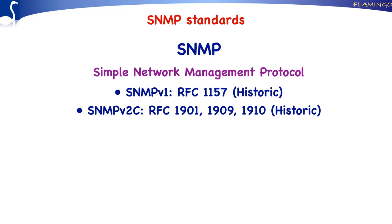SNMP version 2-C is defined in three RFCs: RFC 1901, 1905, and 1910. Like SNMP version 1, however, SNMP version 2-C is declared to be historic. Still, we will see a lot of environments where SNMP version 2 is being used in practice.